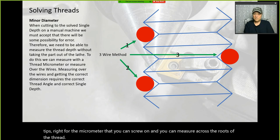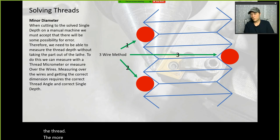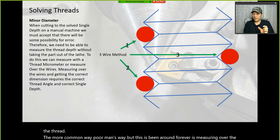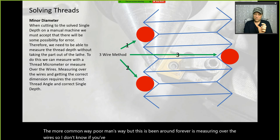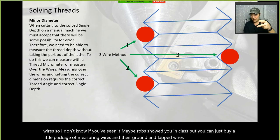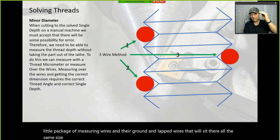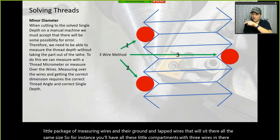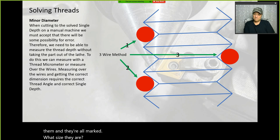The more common, economical way that's been around forever is measuring over the wires. You can buy a package of measuring wires — ground and lapped wires that are all the same size. Each little compartment has three wires marked with their size.